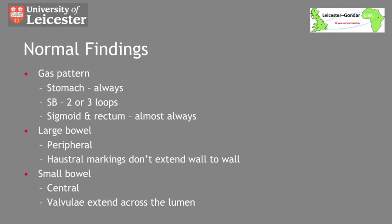The bowel gas pattern seen should give you a lot of information, and remember that gas appears black on x-rays. You should always expect to see some air in the stomach, in two or three loops of small bowel, and almost always in the sigmoid colon and rectum. Seeing more gas than this may suggest the presence of bowel obstruction.